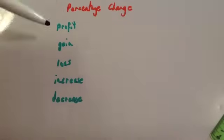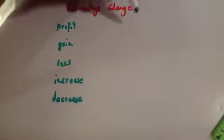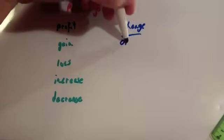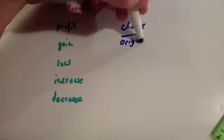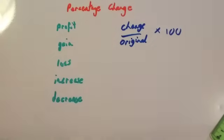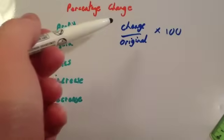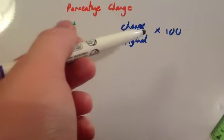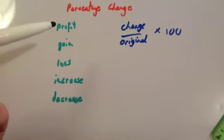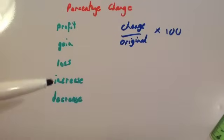So this is how you find the percentage change or profit or gain or loss and so on. You do change divided by the original and then you times by 100. So to find the percentage change you find the change, you divide it by the original and you times 100. That would be the same for the profit, gain, loss, increase, decrease and so on.